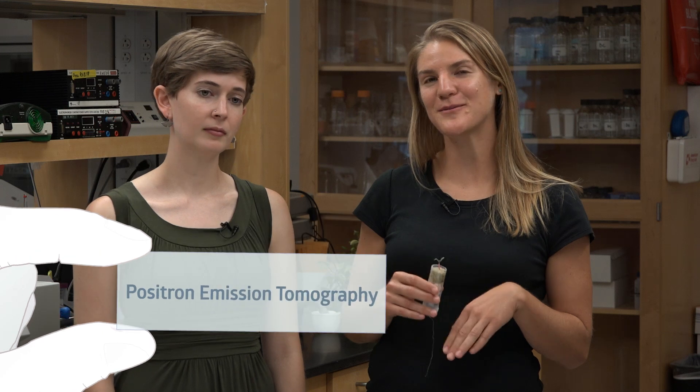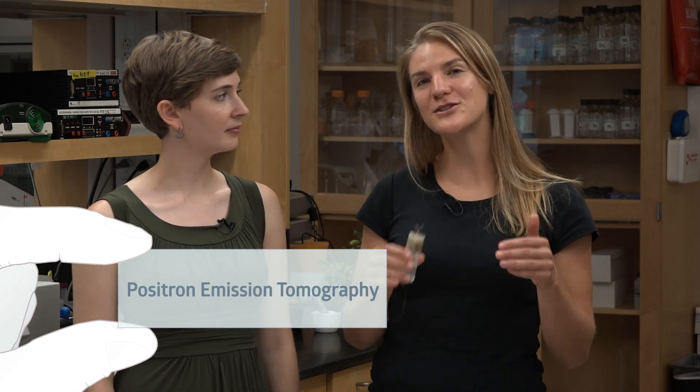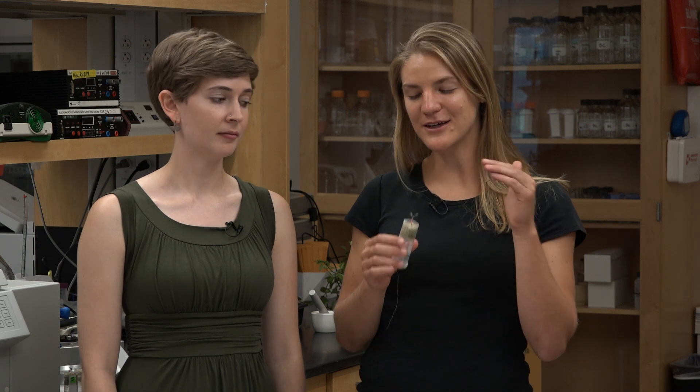So to actually watch photosynthesis happen, we feed these plants radioactive carbon dioxide. To do this, we collaborate with a group at Washington University Medical School that has a PET imager, which stands for positron emission tomography. And this allows us to actually watch the radioactive carbon get turned into sugars in the leaves and move throughout the plant. So if the carbon dioxide weren't radioactive, we would never be able to see it move through the plant, even if it were in the PET imager.